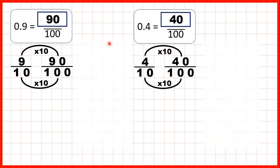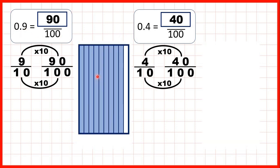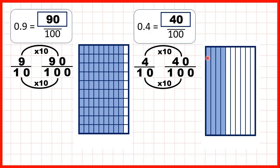To show what we were doing here, we had 0.9, which is 9 tenths. But if we take our fraction bar and instead split it into 100 pieces, we have 90 hundredths. And with 0.4, we have 4 tenths, but if we split the fraction bar into 100 pieces, we have 40 hundredths.